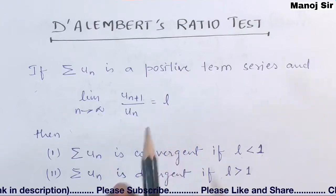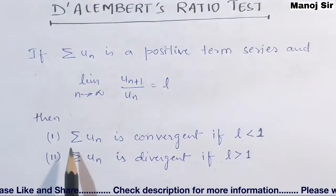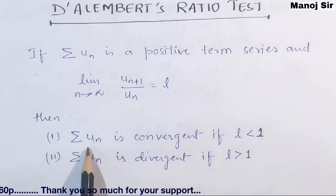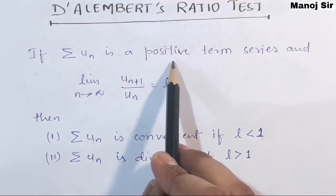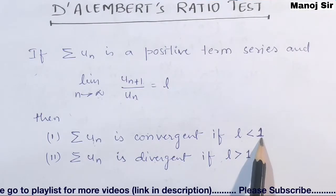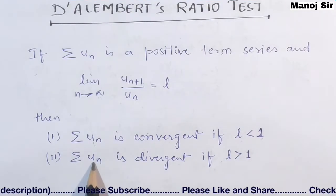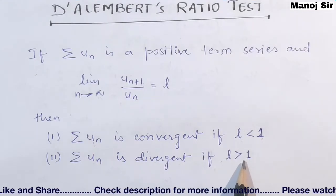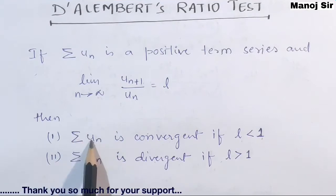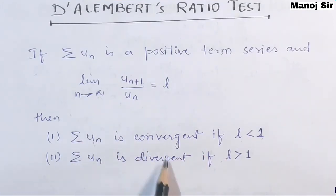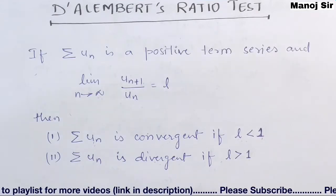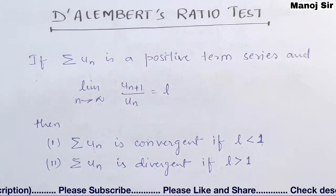then summation UN is convergent if the value of L is less than 1. The series — summation UN — is convergent if L < 1, but summation UN is divergent if L is greater than 1. So this value of L tells whether the series is convergent or divergent: convergent if L < 1, divergent if L > 1.